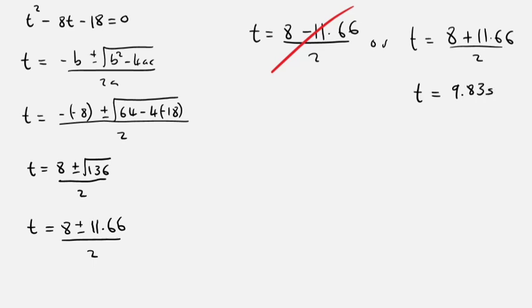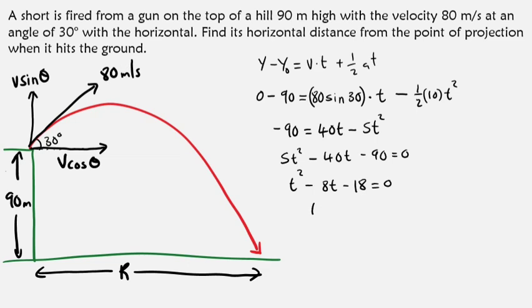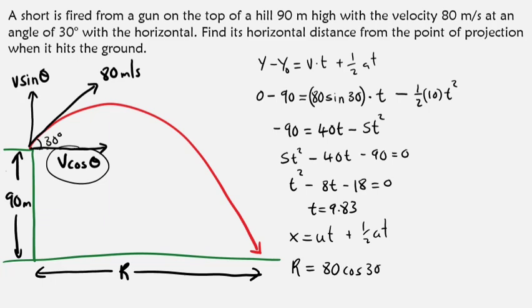So we have our time, time is 9.83. Now remember, we're looking for range. So horizontal range can be given by the formula x equals u t plus half a t². So x is the range that we're looking for. U is the initial velocity, initial velocity v cos θ. So v is 80, cos 30°, multiplied by time. Time we have found to be 9.83 plus zero. There's no acceleration in this axis.